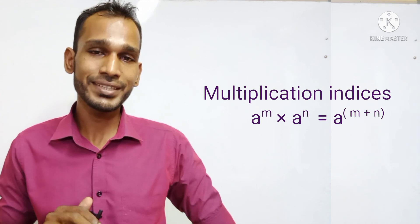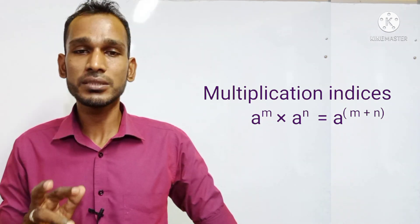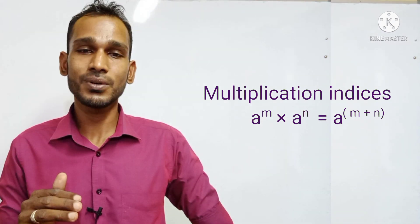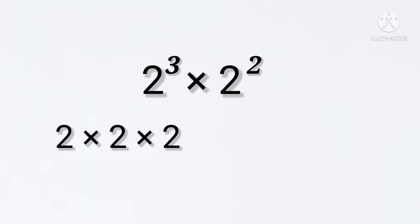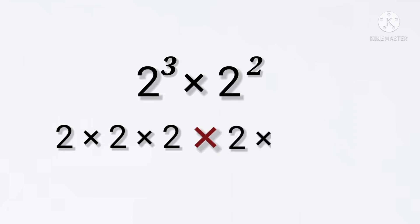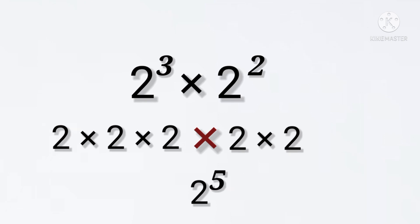We can add the powers. So, a to the power m into a to the power n is equal to a to the power m plus n. For example, 2 to the power 3 into 2 to the power 2: that is 2 times 2 times 2, into 2 times 2 — 5 times itself multiplied. So finally, 2 to the power 5.